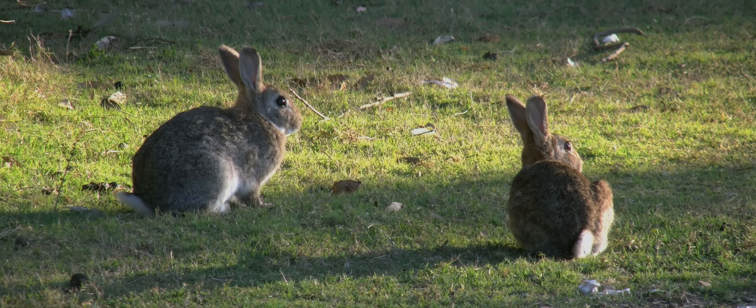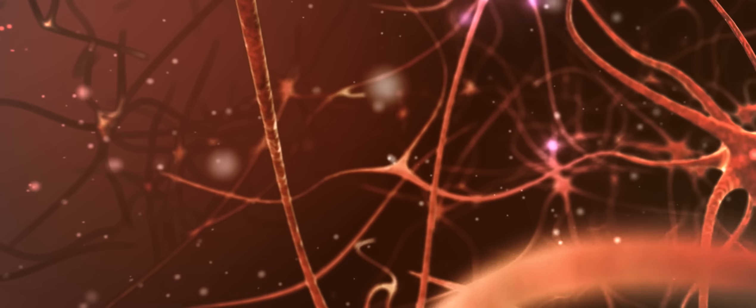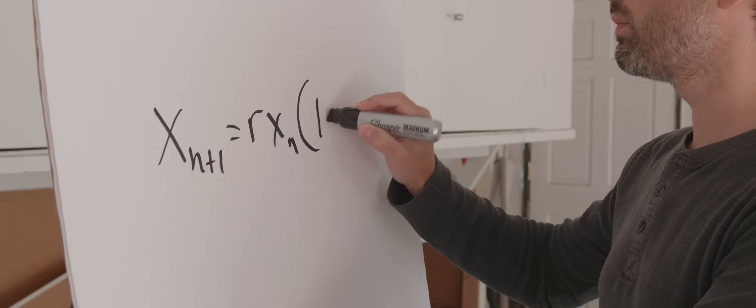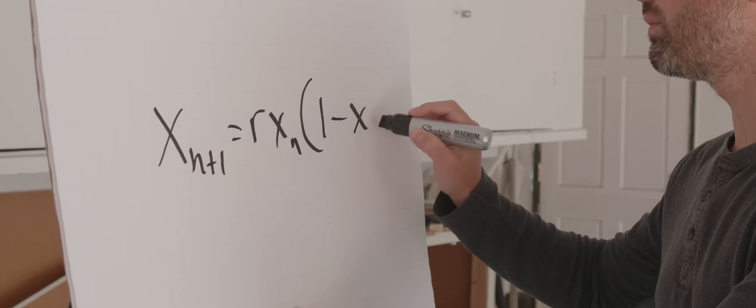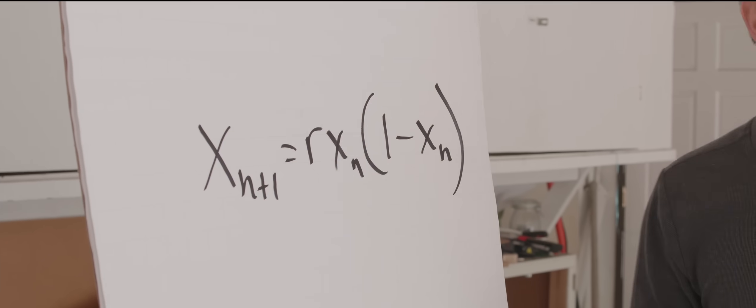What's the connection between a dripping faucet, the Mandelbrot set, a population of rabbits, thermal convection in a fluid, and the firing of neurons in your brain? It's this one simple equation.